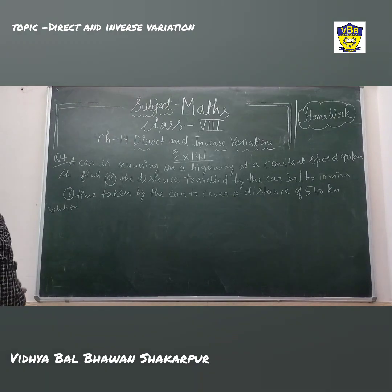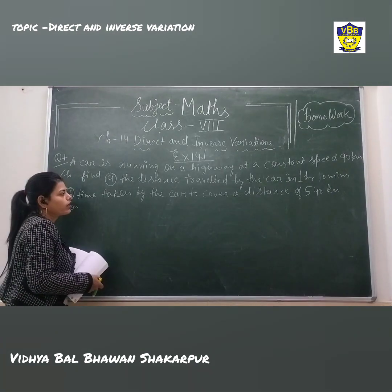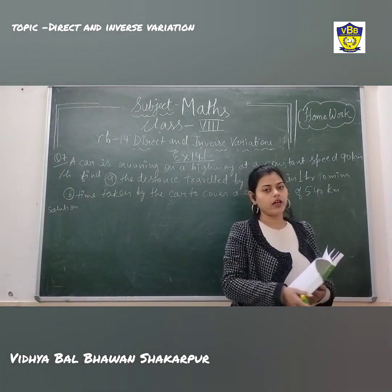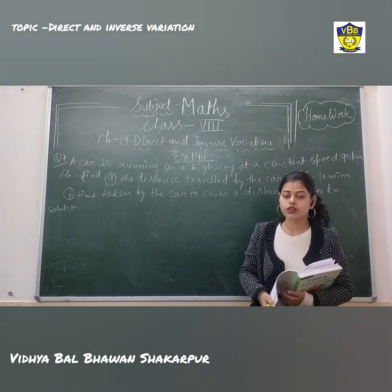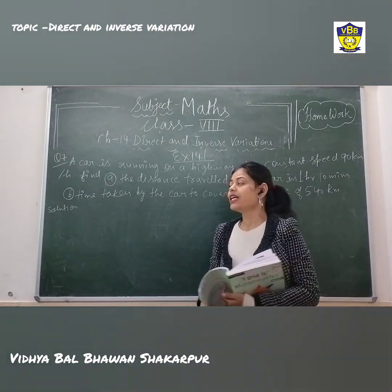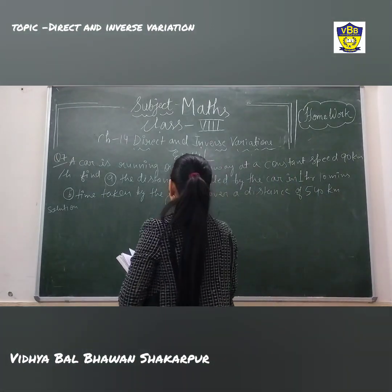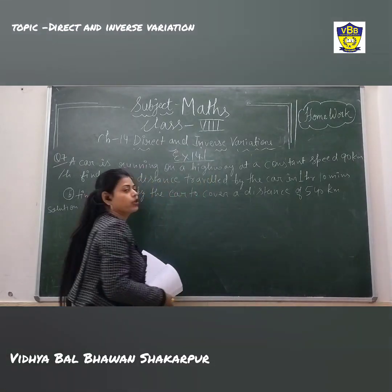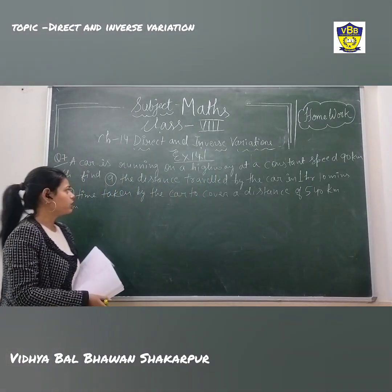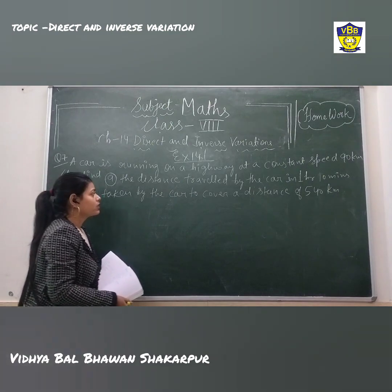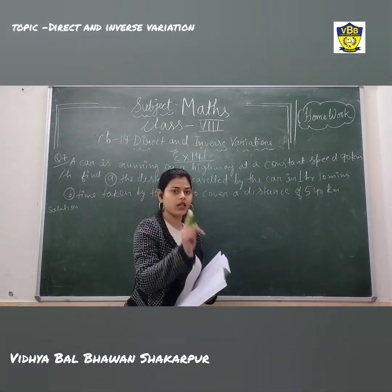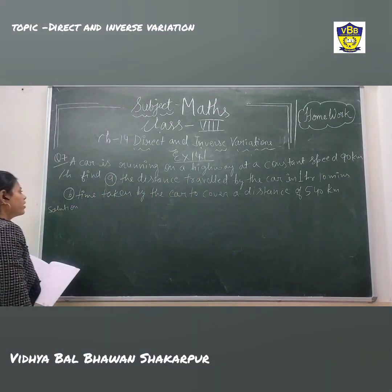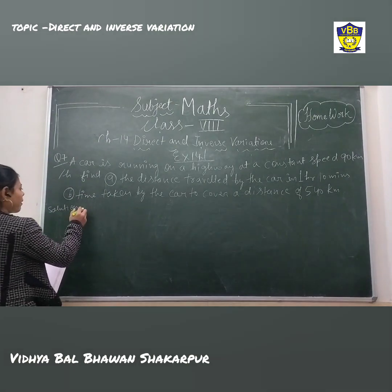Now question number 7 of exercise 14.1: a car is running on a highway at a constant speed of 90 km per hour. Find the distance travelled by the car in 1 hour and 10 minutes. Let's solve part a.